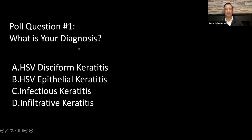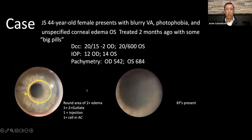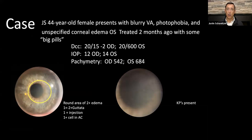Over half of you said HSV discoform keratitis, which is the correct answer. About 16% chose HSV keratitis — and HSV it is, no doubt, but this is a very specific type. Why do we believe it's HSV? One, there's an anterior chamber reaction. Two, it's unilateral — only affecting one eye. Three, the KPs are crucial; having keratic precipitates makes me think something herpetic. And four, that perfectly round area of corneal edema with no epithelial involvement — all of these point to discoform keratitis. In the history, she was likely on oral antivirals — those big pills — and was probably diagnosed accurately initially.